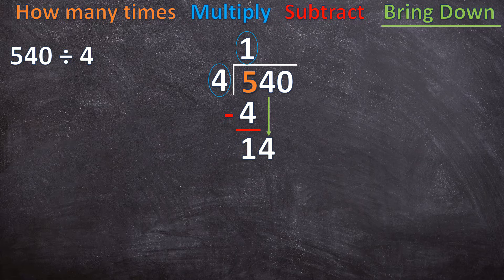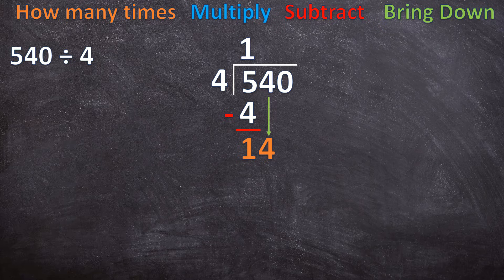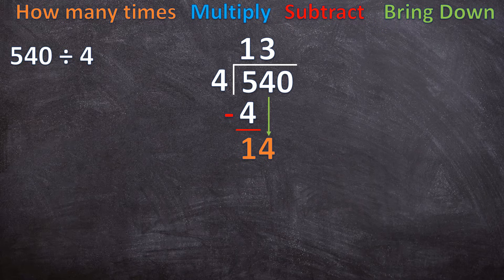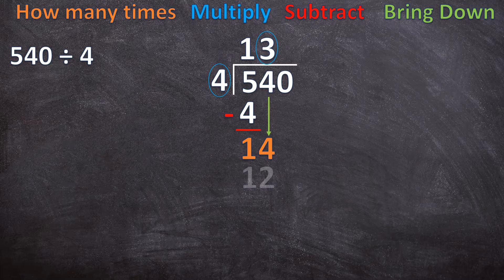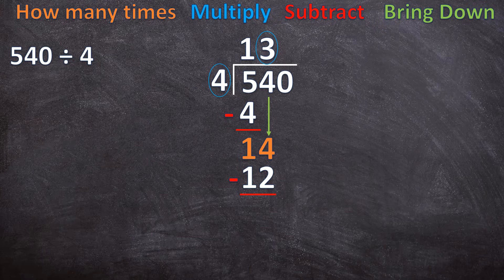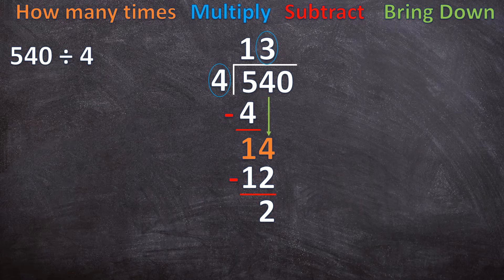Now that you've done that, you start all over again. So what's the first step? How many times can four go into 14? Four can go into 14 three whole times. Now what's the next step? The next step is multiply. So three times four is 12. The next step, subtract. 14 minus 12 is two. The last step, bring down the next one. The next one is zero, so we bring that down.